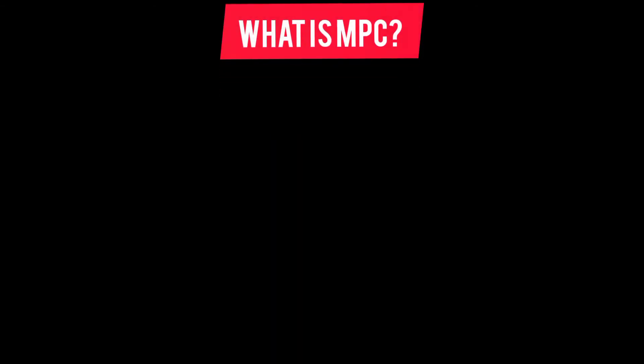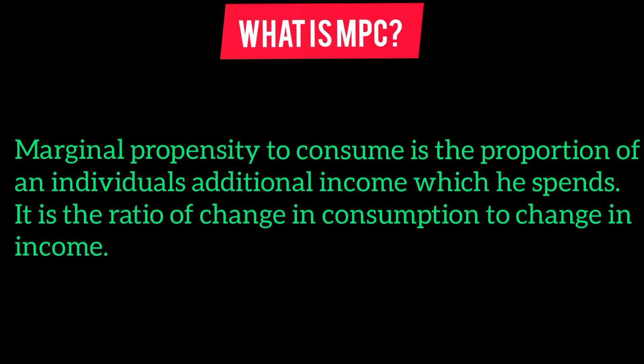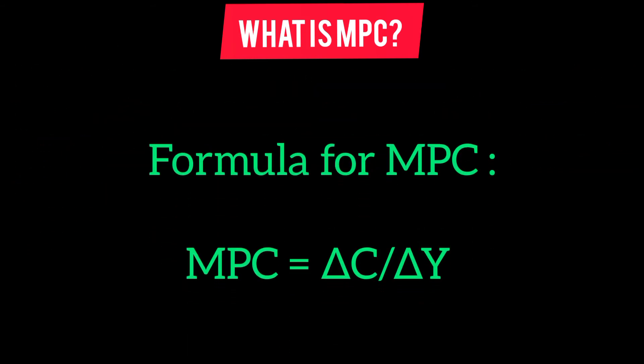Number three: marginal propensity to consume. Marginal propensity to consume (MPC) is the proportion of an individual's additional income which is spent. It is the ratio of change in consumption to change in income, and can also be defined as the slope of the consumption function. The formula for MPC: MPC = ΔC / ΔY (change in consumption divided by change in disposable income).